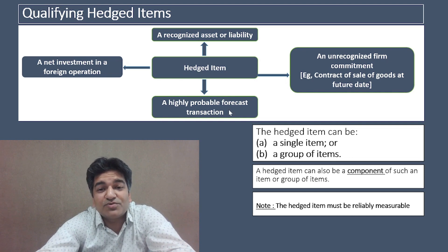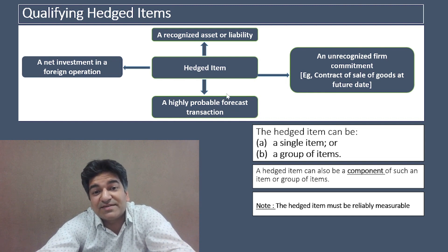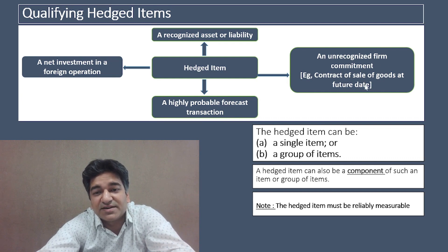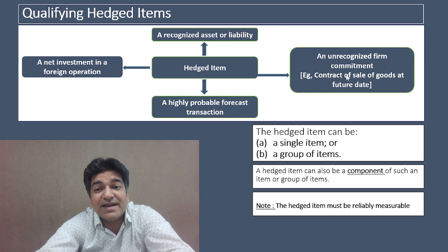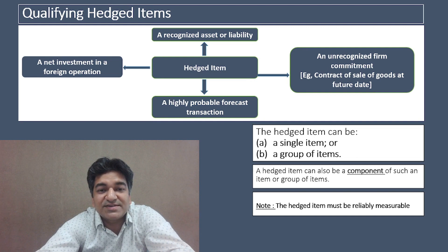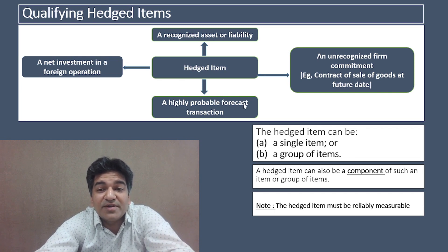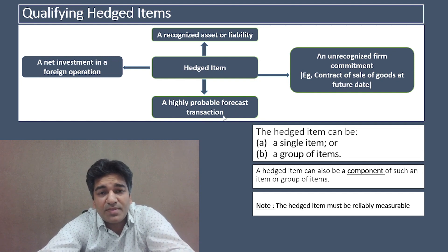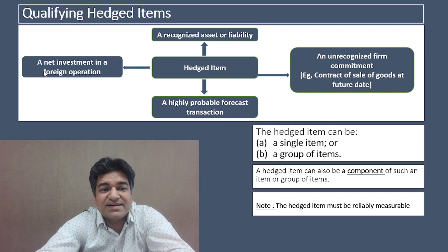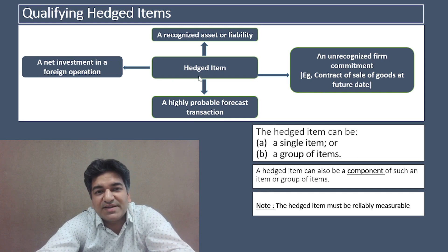A highly probable forecast transaction can also be a hedged item. The question arises: what is the difference between a highly probable forecast transaction and an unrecognized firm commitment? In the case of an unrecognized firm commitment, the entity has already entered into a contract for the sale of goods. However, in the case of a highly probable forecast transaction, the entity has not entered into a sales contract, but the forecast transaction is very likely to happen — it is highly probable.